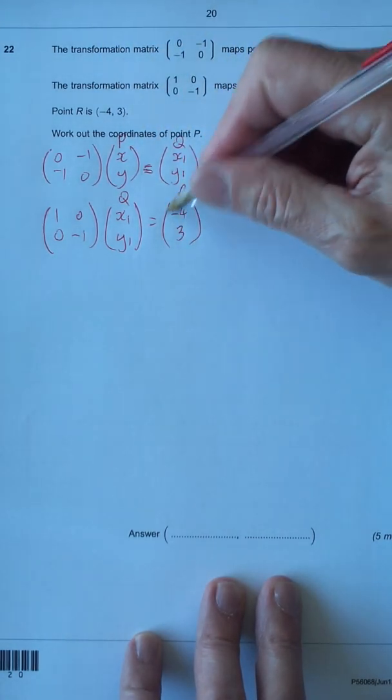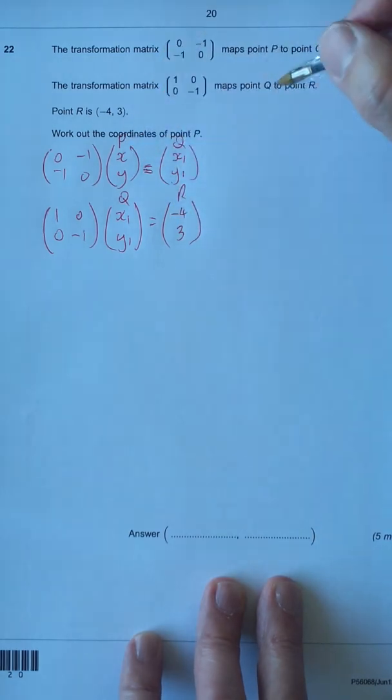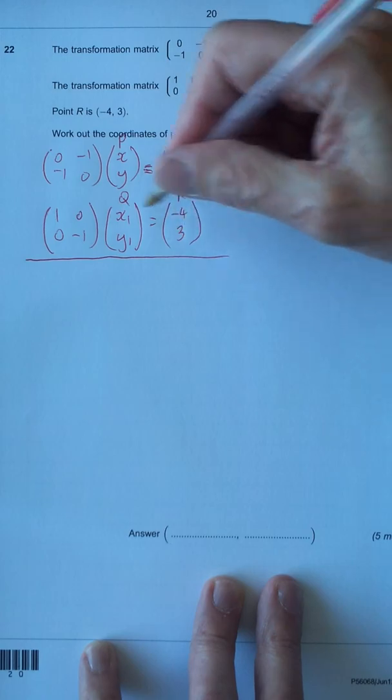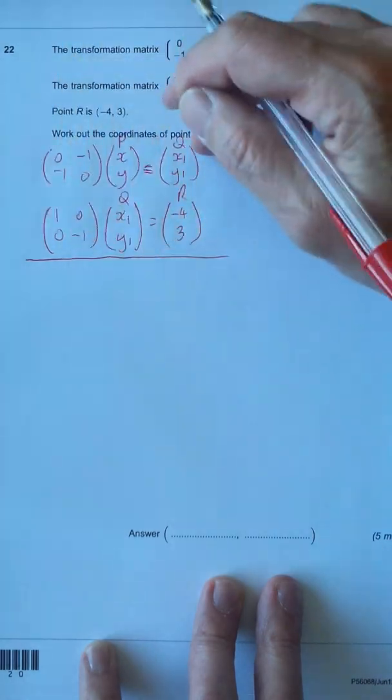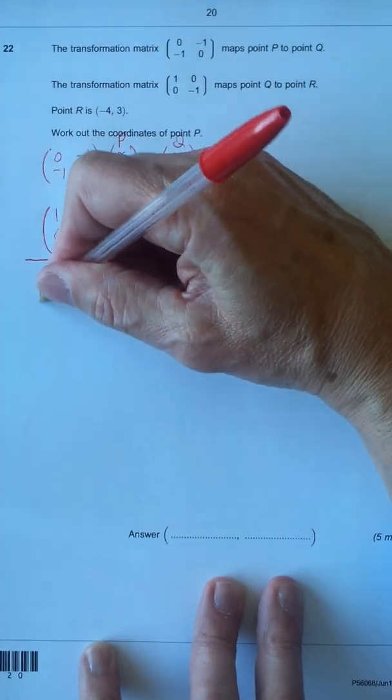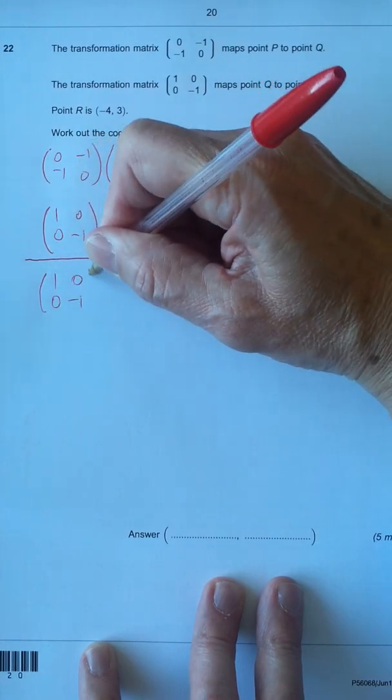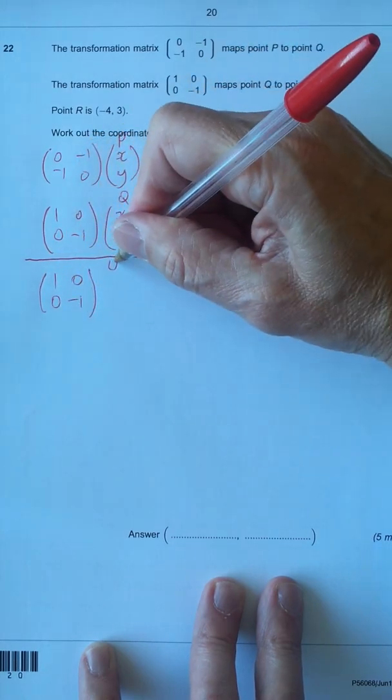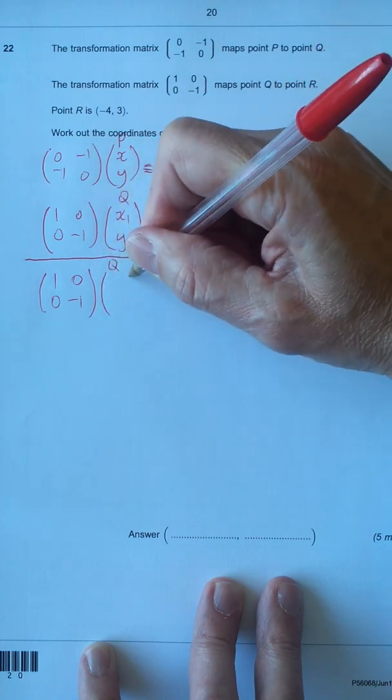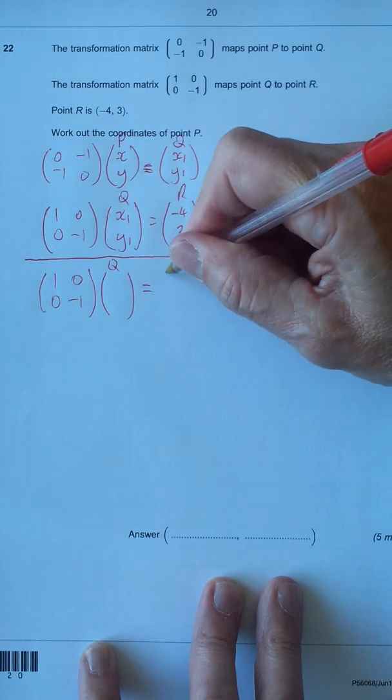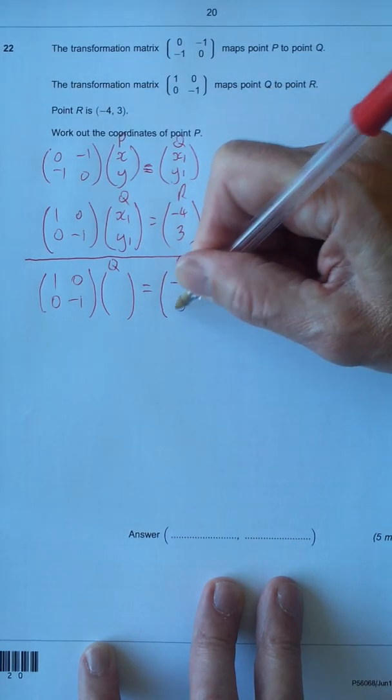So we're going to start from R and work back up to find P. So what I'll do now is line that off and I'll write this one down here and we'll work back up to the top. So we're going to start with 1 0, 0 minus 1. Then Q. We know that's X1 and Y1, but I won't put them in because we're going to find those in a second. Equals R, which is minus 4, 3.